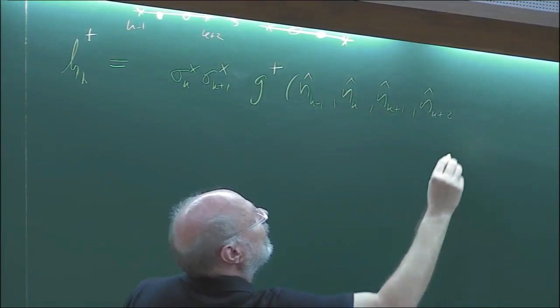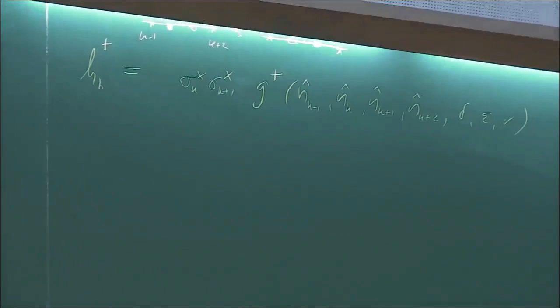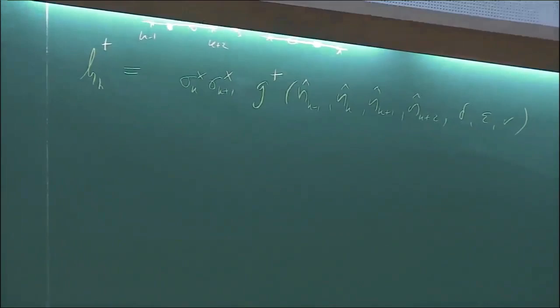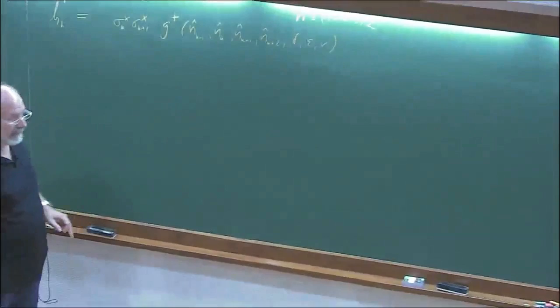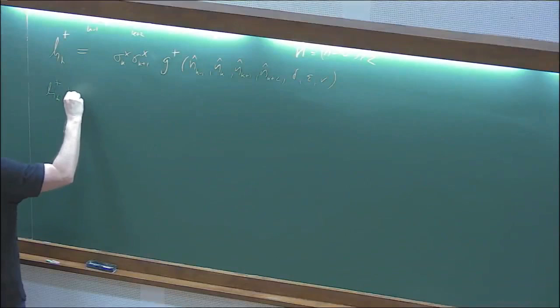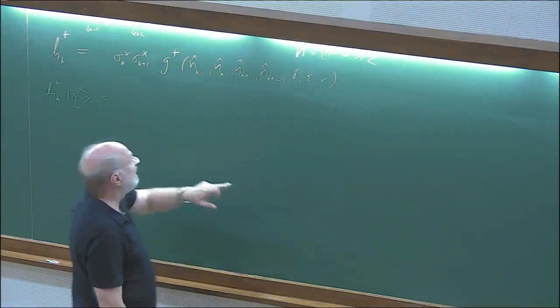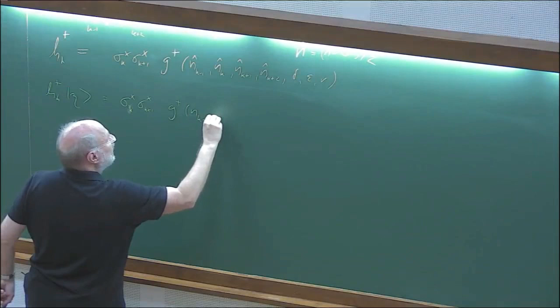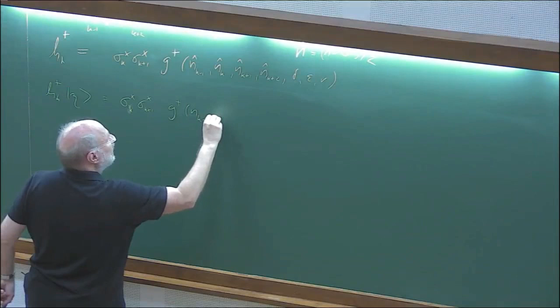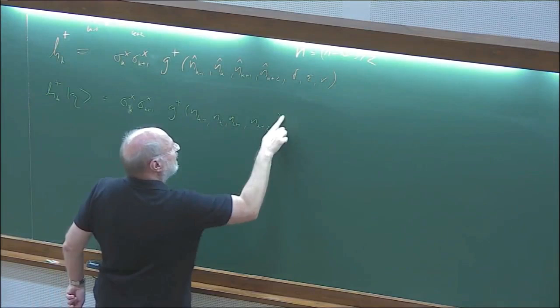It must happen with rate G+, and this function is exactly G+ but with the occupation numbers replaced by their diagonal matrix form N-hat. The occupation number N = (1 - sigma^Z)/2. Applying H_K+ to any configuration eta, since eta is an eigenstate of all these diagonal operators, we get exactly G+(N_{K-1}, N_K, N_{K+1}, N_{K+2}; delta, epsilon, R) times the original configuration.